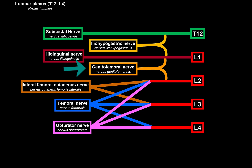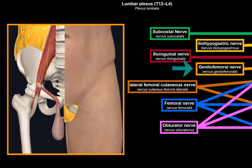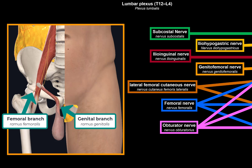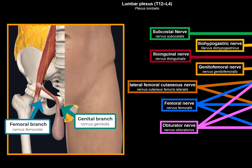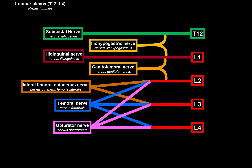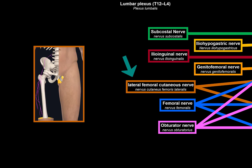The genitofemoral nerve, unlike the previous nerves, penetrates the psoas major and exits on its ventral surface, then splits into a genital branch and a femoral branch. The genital branch passes through the inguinal canal to innervate the cremaster muscle and provides sensory innervation for the scrotum and a small area on the medial thigh in men; in women it innervates part of the labia majora and the medial thigh. The femoral branch passes through the vascular space to innervate the skin on the medial thigh.